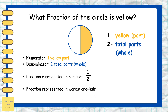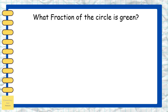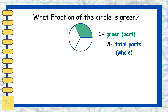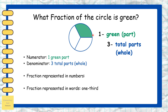What fraction of the circle is green? In this circle, we have one green part and three total parts in the whole. The numerator is one green part, and the denominator is three total parts. The fraction represented in numbers is one by three, and in words it is one third.